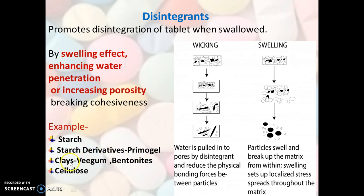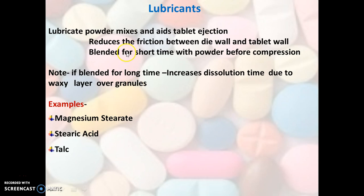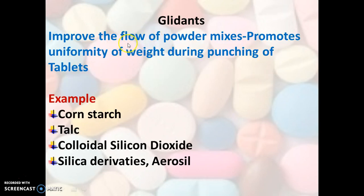Examples of disintegrants are starch, starch derivatives such as Primogel, clays such as veegum and bentonite, and cellulose. The next class is lubricants. Lubricants aid the powder mix and aid tablet ejection by reducing friction between the die wall and tablet wall during compression. Lubricants are blended for a short time with the powder before compression. If blending is too long, it may cause a waxy layer over the granules which increases hardness and therefore affects dissolution.